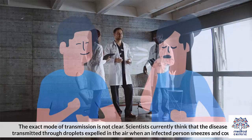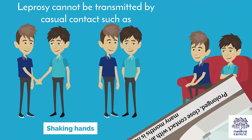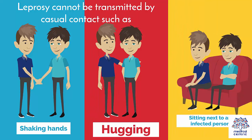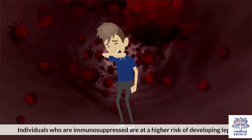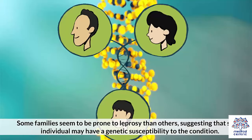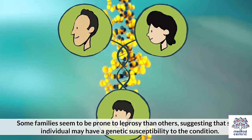Prolonged close contact with an individual suffering from untreated leprosy over many months is needed to catch the disease. Leprosy cannot be transmitted by casual contact, such as shaking hands, hugging, or sitting next to an infected person. It is also not spread through sexual contact or passed on from a mother to her unborn child. Individuals who are immunosuppressed are at a higher risk of developing leprosy. Some families seem to be more prone to leprosy than others, suggesting that some individuals may have a genetic susceptibility to the condition.